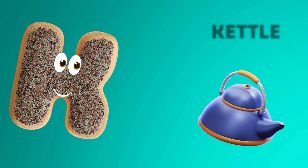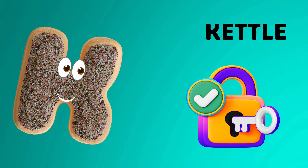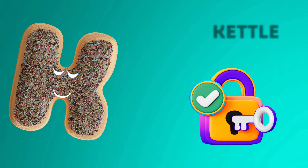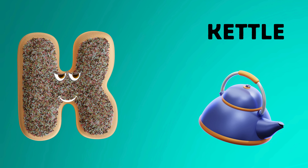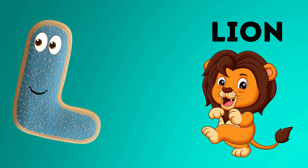K is for cattle, k-k-k-cattle. K is for key, k-k-key. K is for k-k-k-k-cattle. K is for k-k-k-k-key.